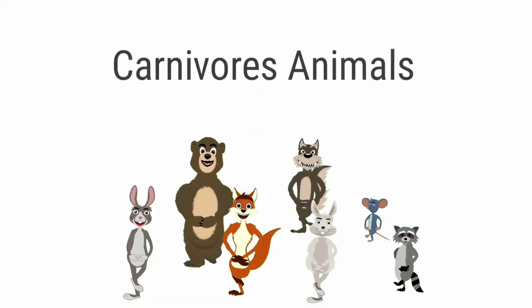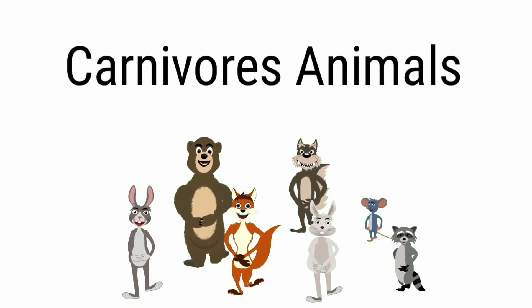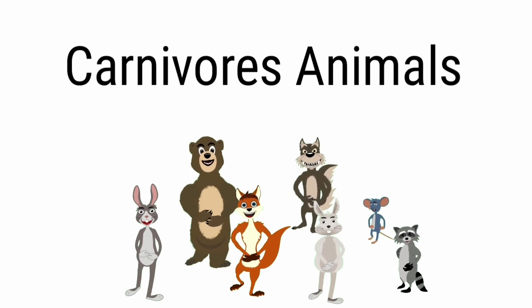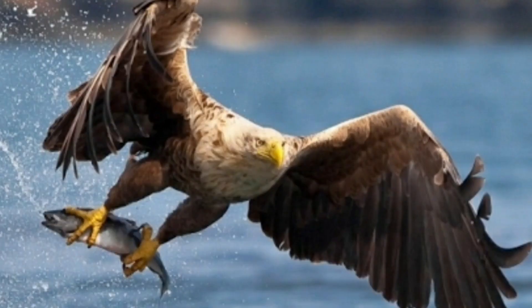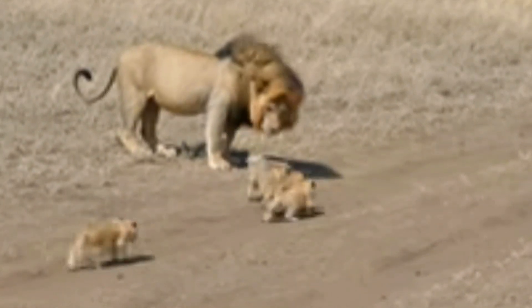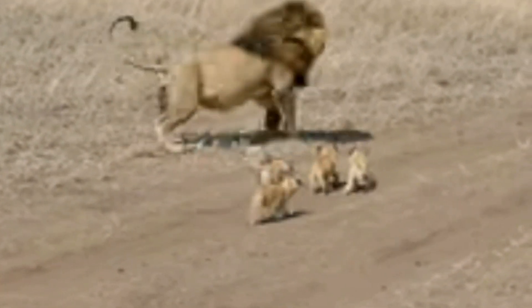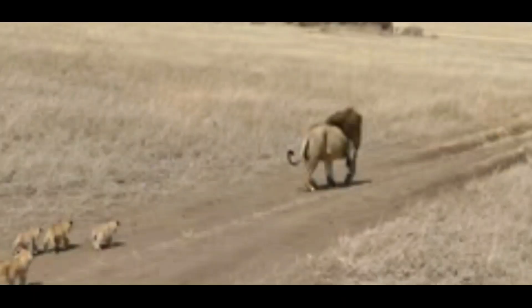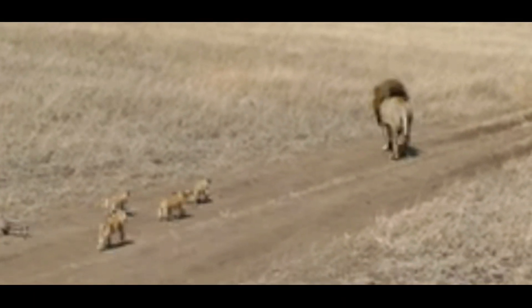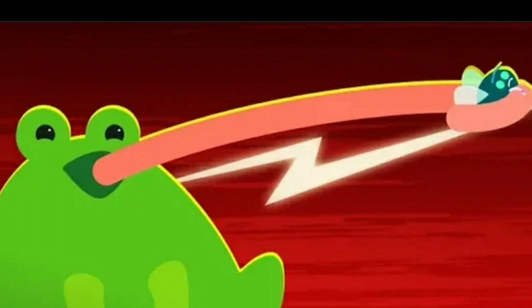Now the carnivores animals. Animals like the lion, wolf, eagle and snake that eat other animals are known as carnivores. Carnivore birds like eagles and vultures have strong pointed beaks that they use to tear the flesh of animals they catch. Carnivore animals like lions and leopards have long sharp canines to tear meat. Frogs and lizards have a long and sticky tongue which they use to catch their prey.